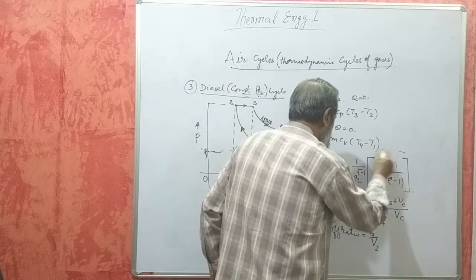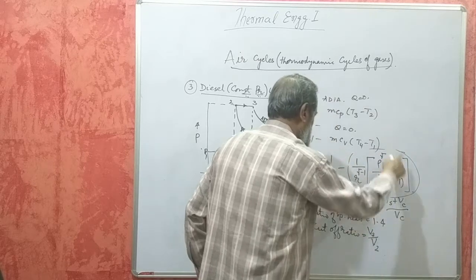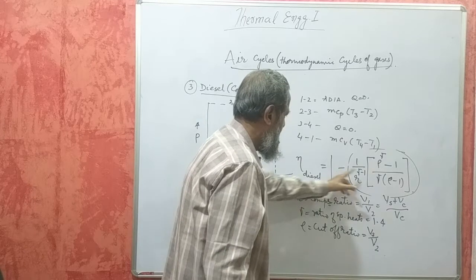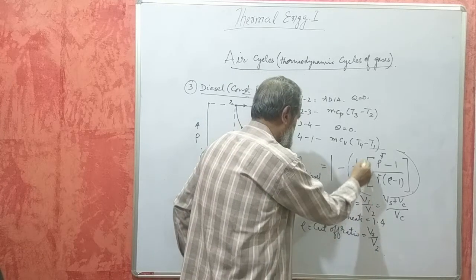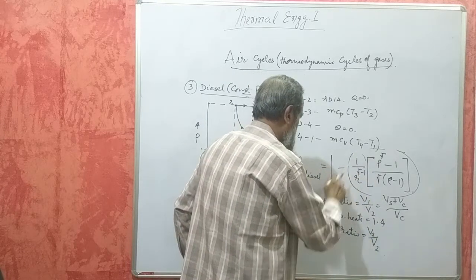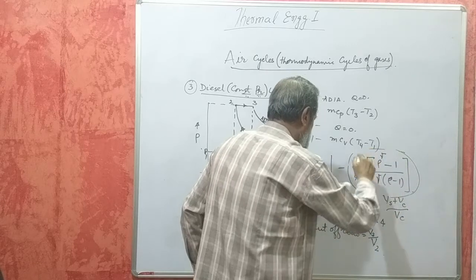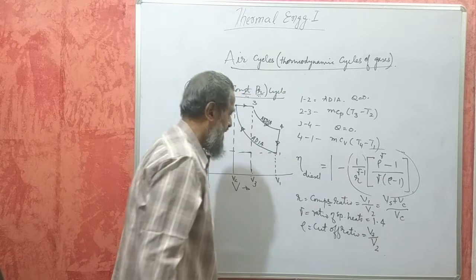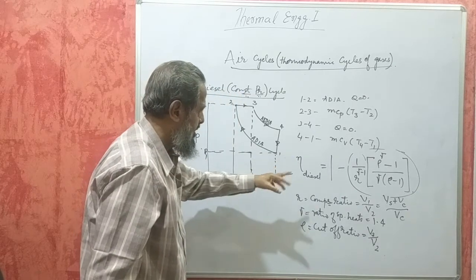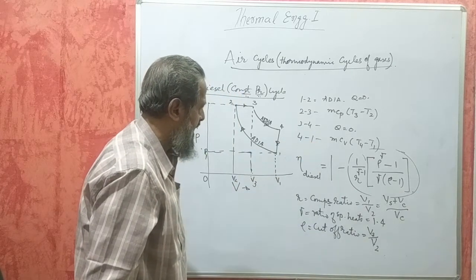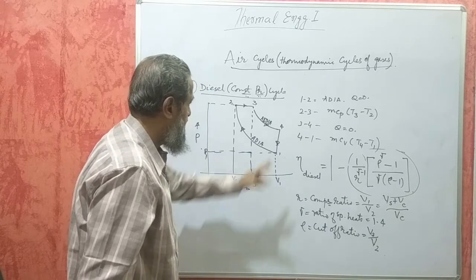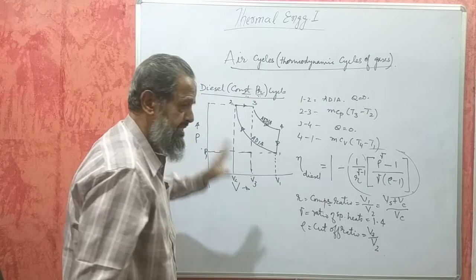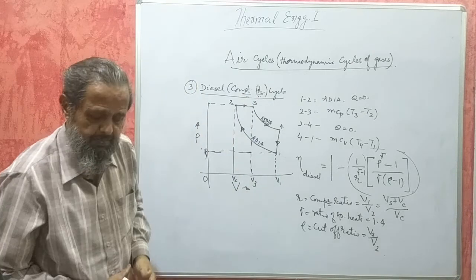We must first do all the calculations, and whatever value we get must be subtracted from 1 — students generally make the mistake of not doing this. Subtracting gives the air standard efficiency. Multiplying by 100 gives it in percentage. This is the brief working of the Diesel cycle or Constant Pressure cycle.